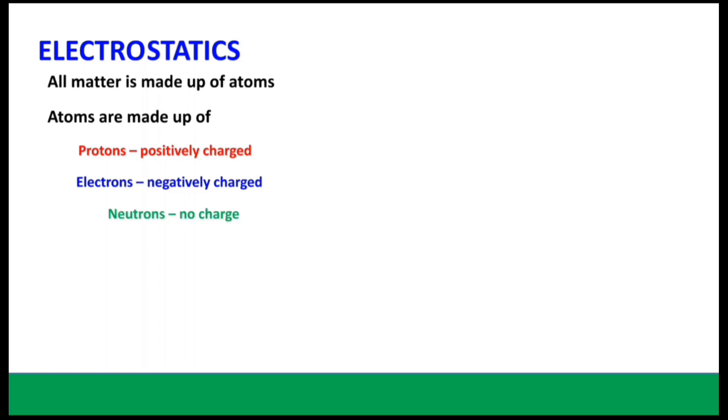As a brief introduction, matter is made up of atoms and their subatomic particles: three of them. Protons are positively charged, electrons are negatively charged, and neutrons have no charge.